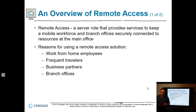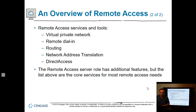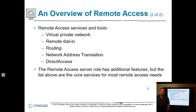There are lots of reasons for using remote access: work-from-home employees, frequent travelers, business partners, and branch offices. We've also set up VPNs for contractors to connect in from their location to do jobs. Remote access includes virtual private network, remote dial-in (which is not used as much anymore), network address translation, and Direct Access VPN — which we covered in the last module, and which Microsoft is now backing away from because it doesn't work the way they had hoped.